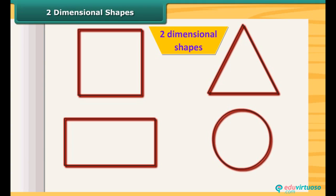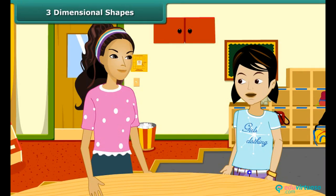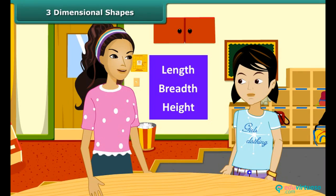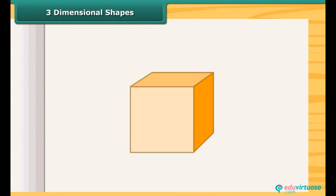Are the examples of two-dimensional shapes. What are three-dimensional shapes? A solid object having three measurements like length, breadth and height are called three-dimensional objects. Look at this cuboid. It has length, breadth and height. So this is a three-dimensional object.